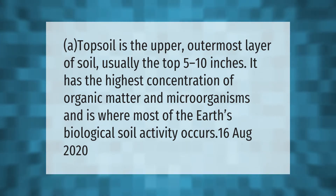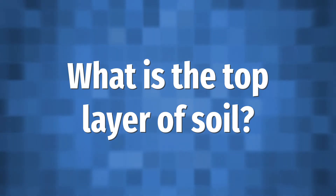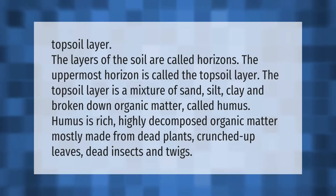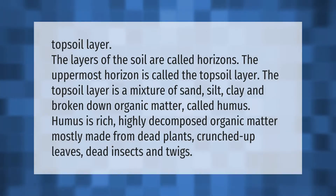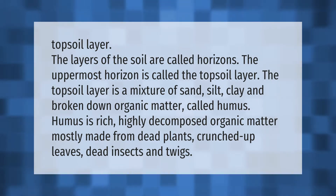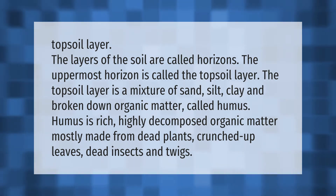The layers of the soil are called horizons. The uppermost horizon is called the topsoil layer. The topsoil layer is a mixture of sand, silt, clay, and broken-down organic matter called humus. Humus is rich, highly decomposed organic matter mostly made from dead plants, crunched-up leaves, dead insects, and twigs.